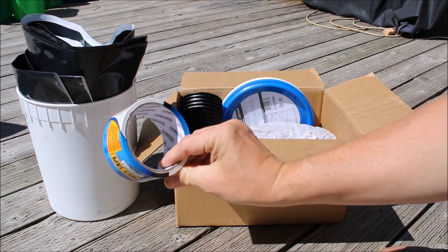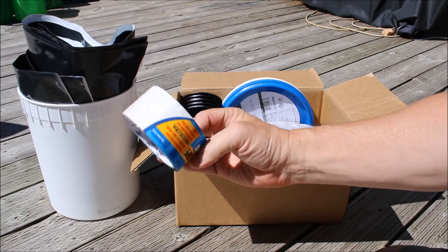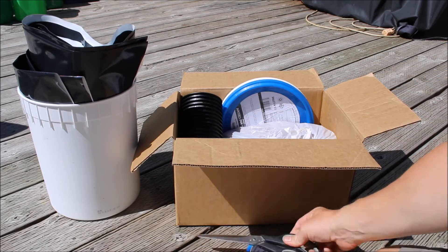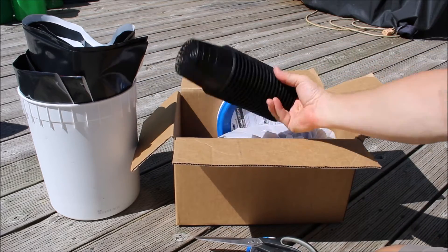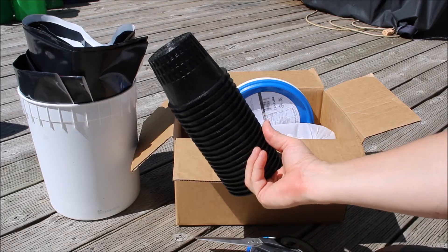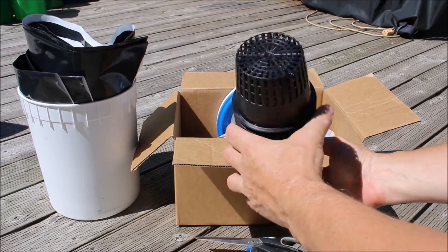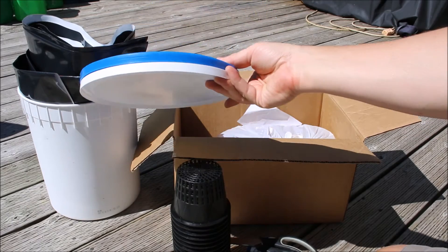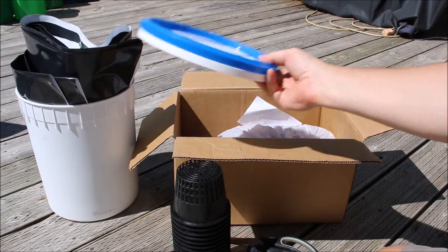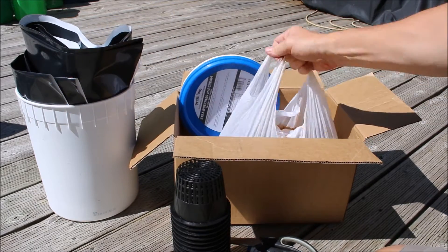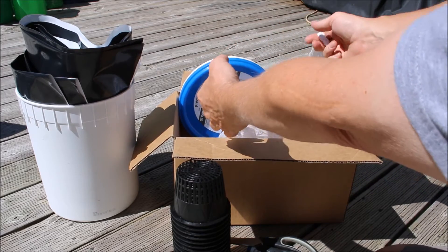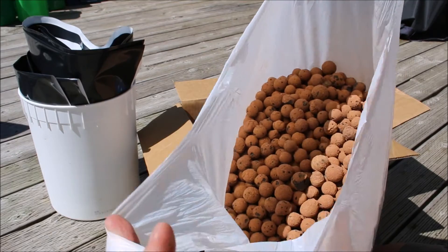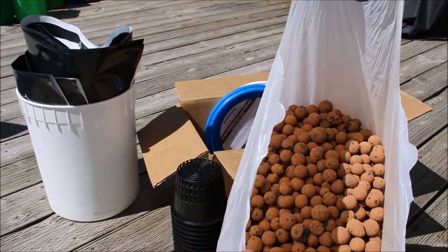You'll need a piece of duct tape. I've got some white stuff and you'll see why. A pair of scissors, some net pots. As you can see, I'm planning on doing a bunch of these. A lid for your container and I've got a bag of hydroponic clay here for putting around my plant.